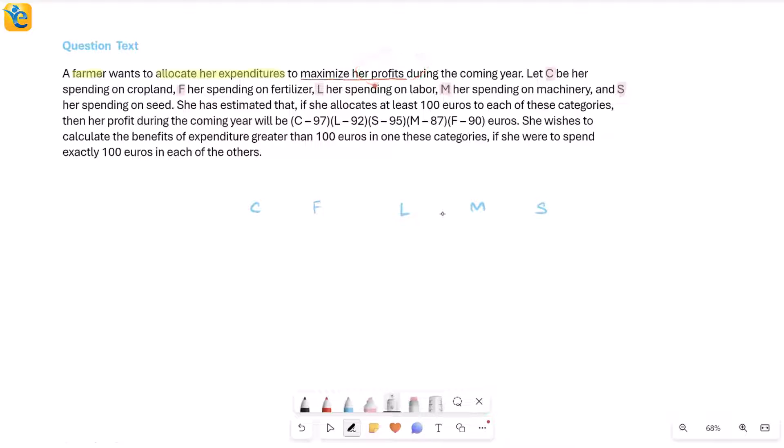That's what you find next: she has estimated that if she allocates at least 100 euros to each of these five categories, then her profit during the coming year will be this expression. So this is how the expenditure connects with the profit. If all of these are at least 100, greater than or equal to 100, then you can use this model to find the profit.